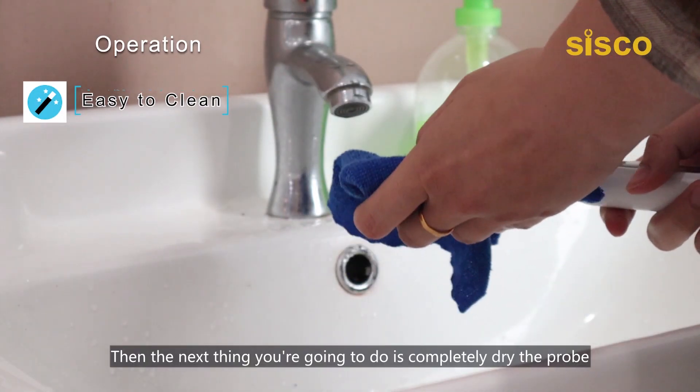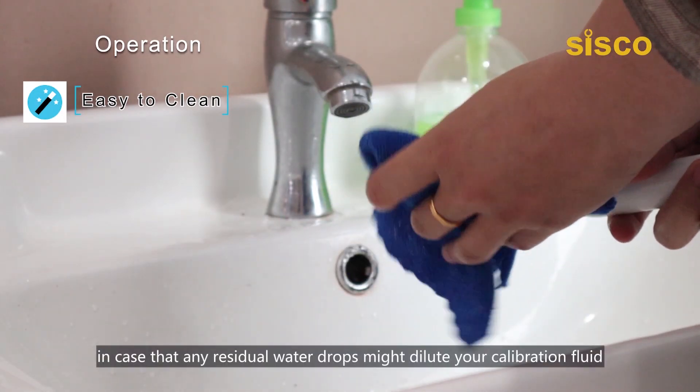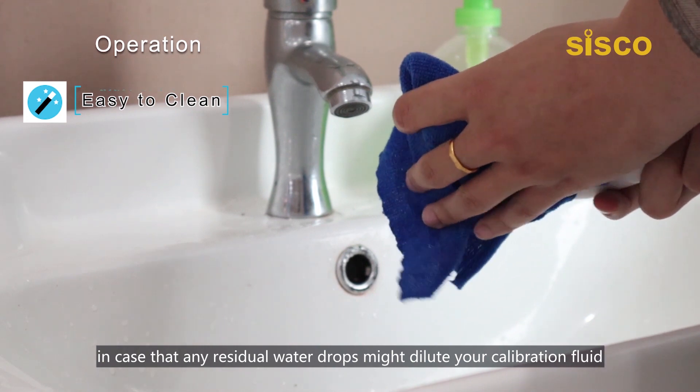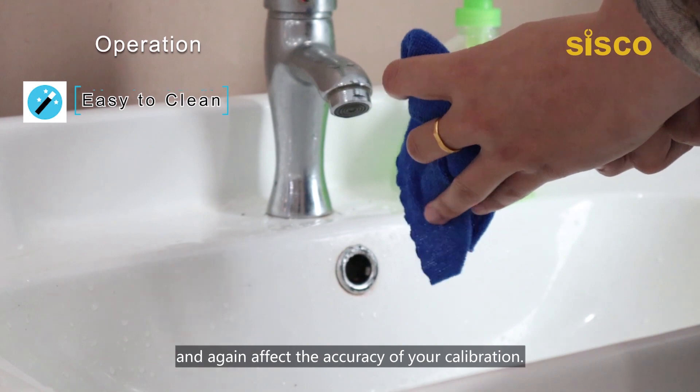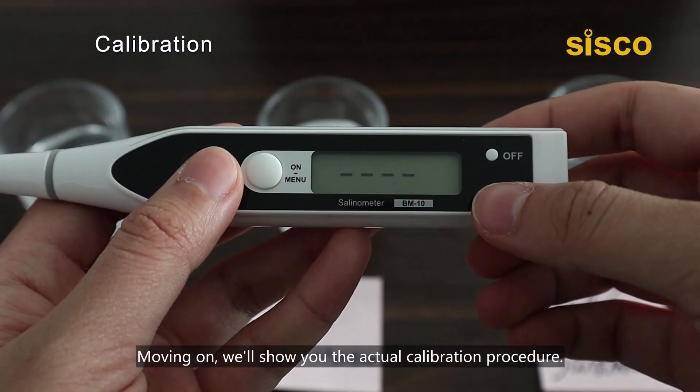Then the next thing you're going to do is completely dry the probe in case that any residue water drops might dilute your calibration fluid and again affect the accuracy of your calibration. Moving on, we'll show you the actual calibration procedure.